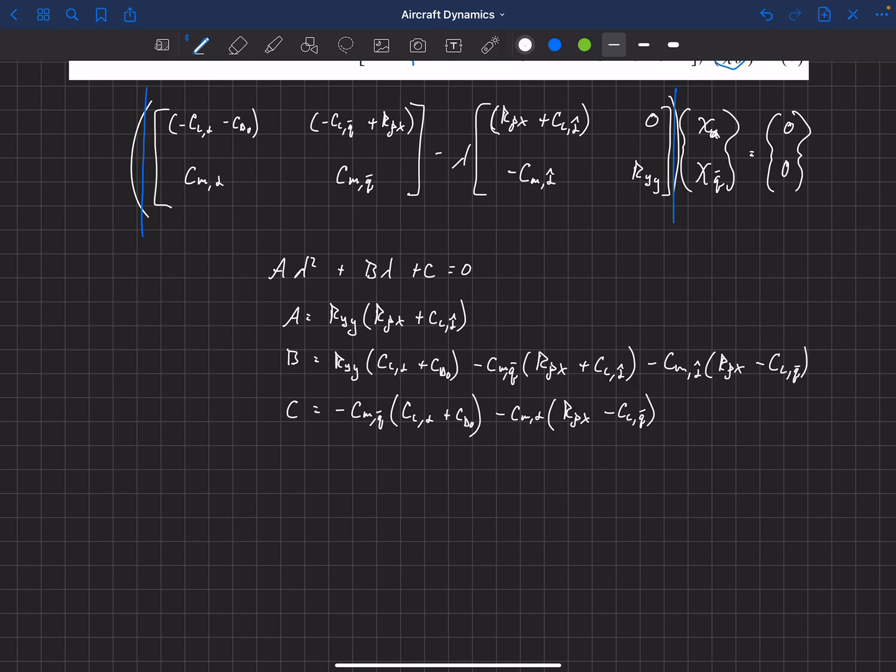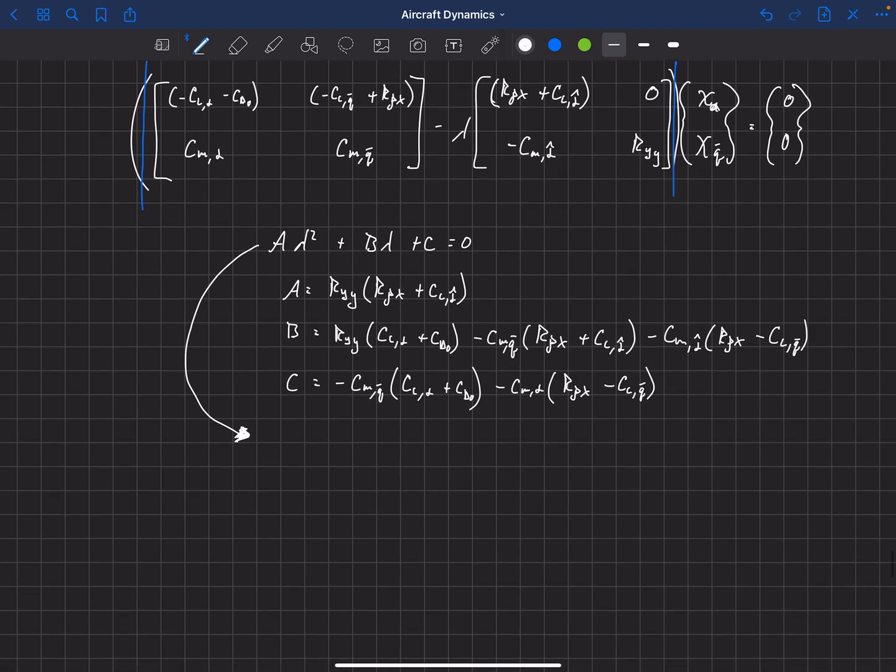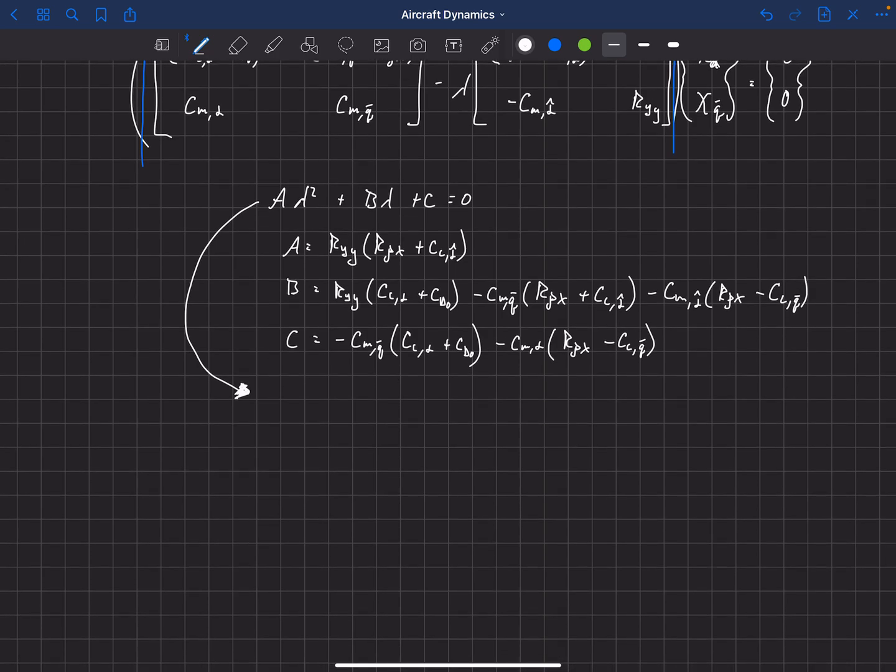So there's our characteristic equation. And of course this can be solved using the quadratic equation here, and that would give lambda equal to minus B plus or minus the square root of B squared minus 4AC all over 2A.